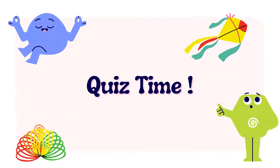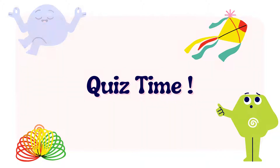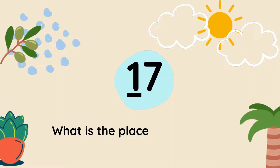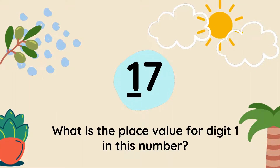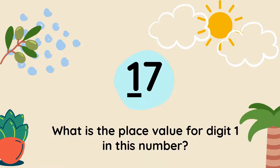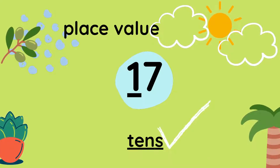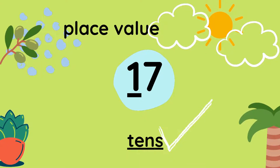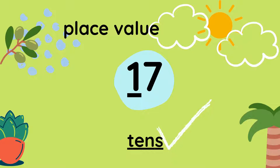Before we begin, let's do some short quiz. Let's read the question together. Look at the number and look at the underlined number. What is the place value for digit 1 in this number? The place value for number 1, the underlined number, is 10s. Well done if you got the answer correct.